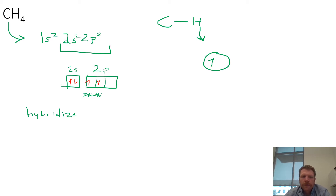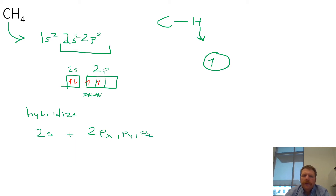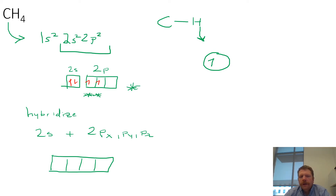We need to hybridize orbitals. What we are going to do is come up with an orbital that is a combination of a 2s orbital plus our 2p orbitals — combining it with our 2px, 2py, and 2pz. So rather than having the original orbital diagram, it's going to look different. This hybrid orbital consists of 1s and 3p orbitals, so this is known as an sp3 hybrid orbital.